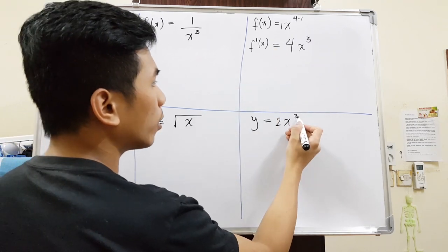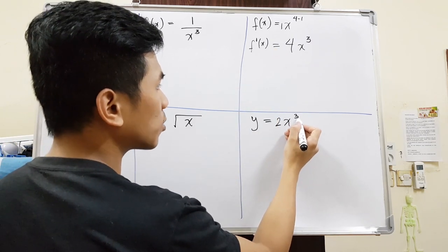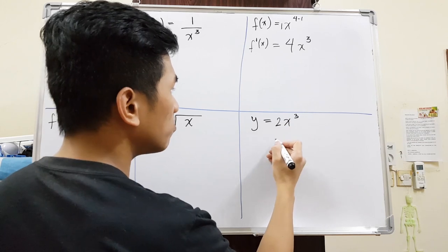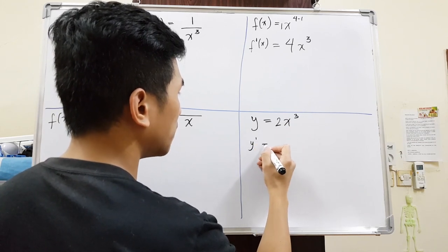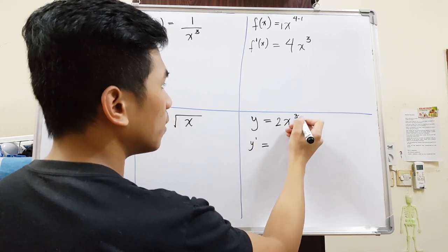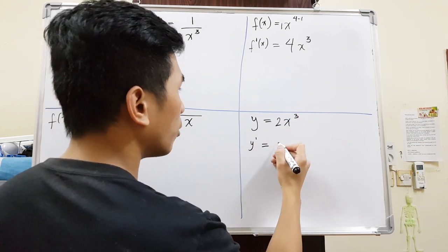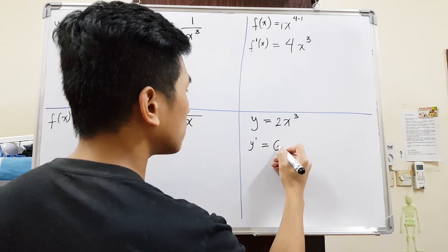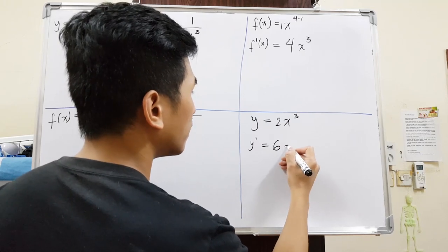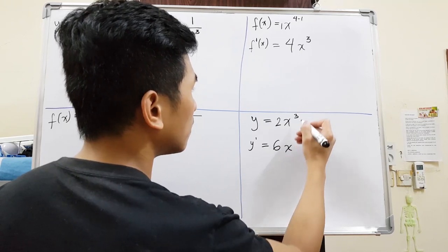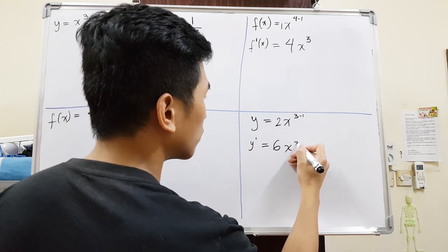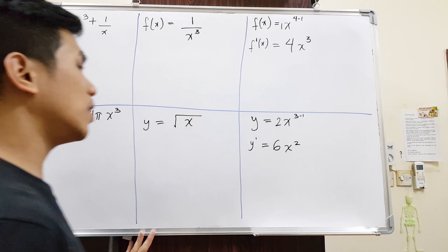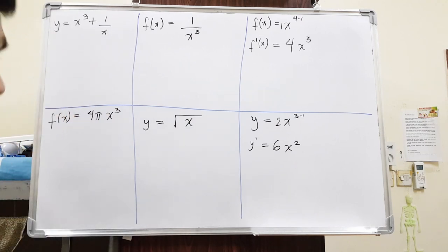Next example: the power comes forward. So for 3x² (y prime means the derivative), 3 times 2 equals 6, and then x — the power will be less by 1, giving us 2. So the derivative is 6x squared.